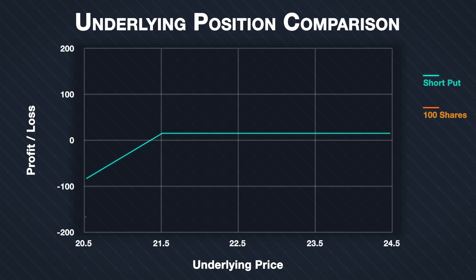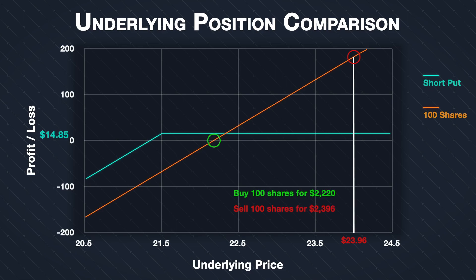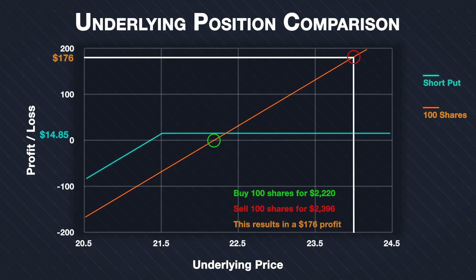How does this profit compare to simply buying the underlying? If we had purchased 100 shares of SLV at $22.20, the entry cost would have been $2,220. At the end of Friday, the price had risen to $23.96, meaning 100 shares could be sold for $2,396 — a profit of $176 minus a small fee. Due to how far the price rallied, buying the shares would have resulted in a significantly larger profit. By selling the put, we capped our potential profit at the premium collected minus fees.